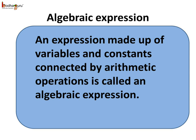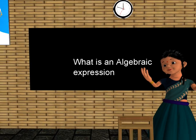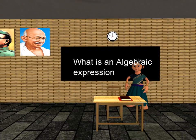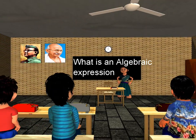And lastly, what is an algebraic expression? An expression made of variables and constants connected by arithmetic operations is called an algebraic expression. For example, 2a plus 3 or 18y minus 5 or 16m plus n. So, that was all about variables and the algebraic expression. Bye-bye, children.